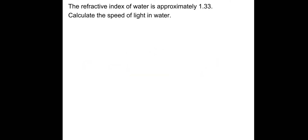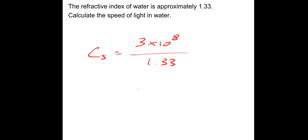In this one, the refractive index of water is approximately 1.33; calculate the speed of light in water. The speed of light in the substance is simply the speed of light in a vacuum, 3×10⁸, divided by the refractive index of 1.33. That gives us the speed of light in water equal to 2.3×10⁸ metres per second.